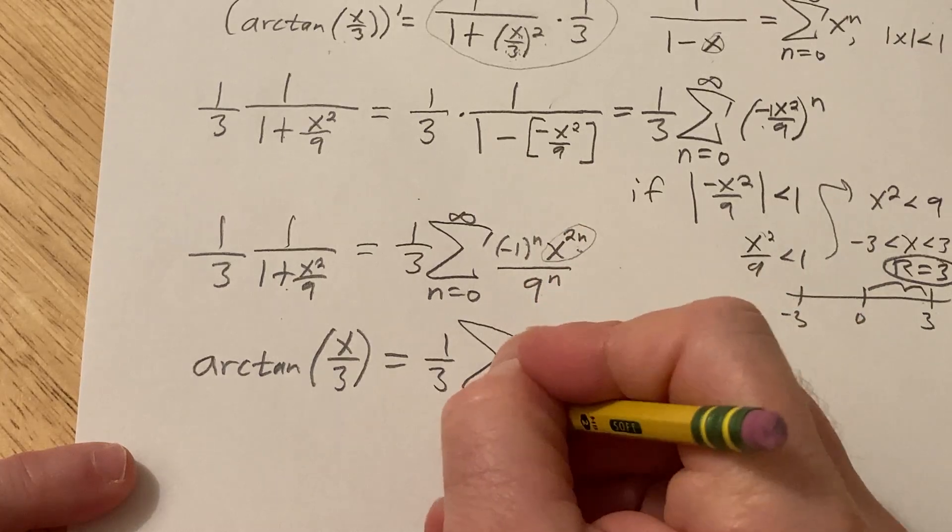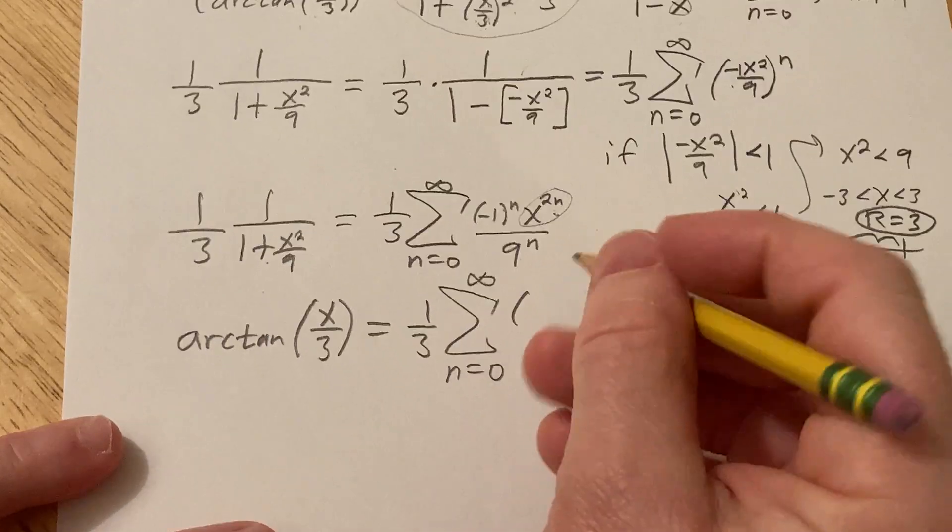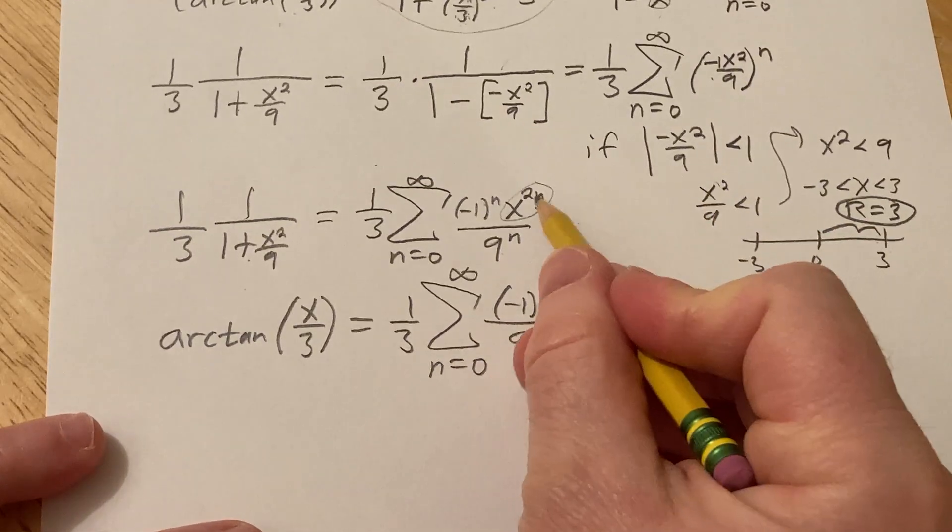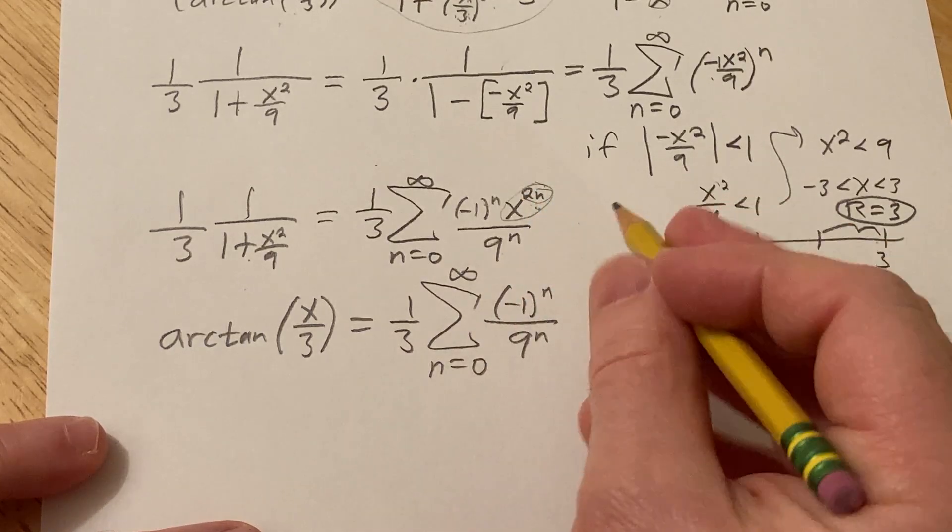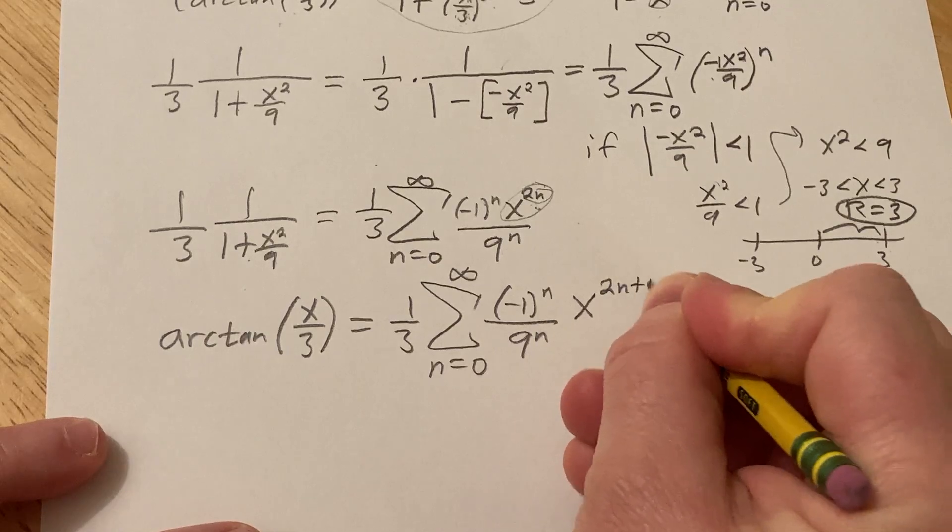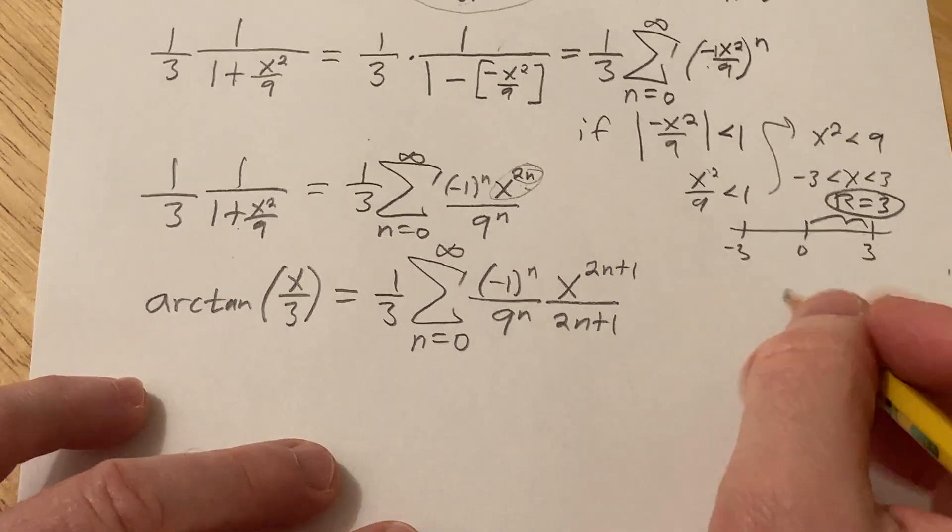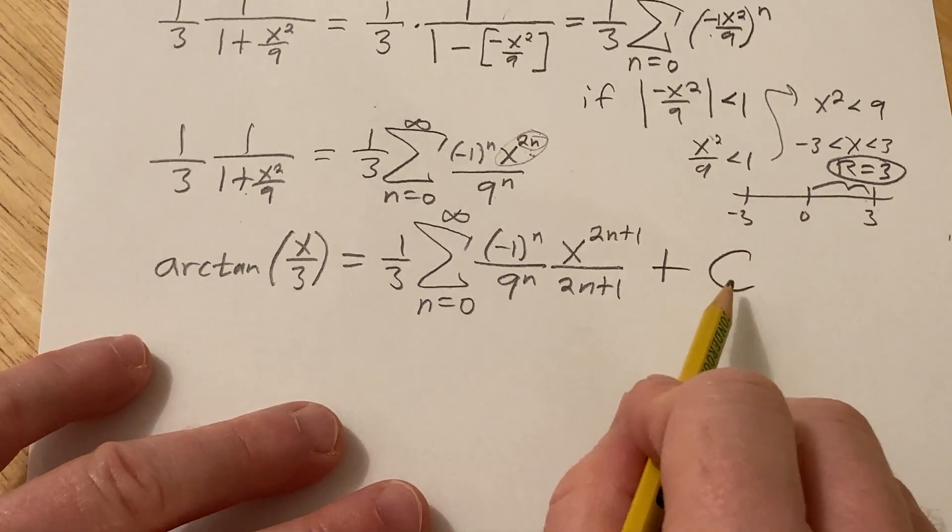So this is 1 third infinite sum as n runs from 0 to infinity. I'm just going to put these in the front like this. Negative 1 to the n, 9 to the n. And so now we're going to integrate this. And so basically, you just add 1 to the exponent. So it'll be X to the 2n plus 1. And then you divide by the result, 2n plus 1. Cool, right? And then we have our constant of integration, capital C.